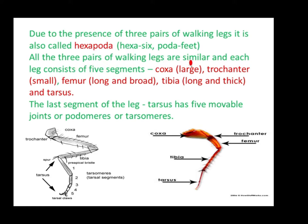All three pairs of walking legs are similar and each leg consists of five segments: coxa (large), trochanter (small), femur (long and broad), tibia (long and thick), and tarsus. The tarsus, the last segment of the leg, has five movable joints or podomeres, also called tarsomeres or tarsal segments.